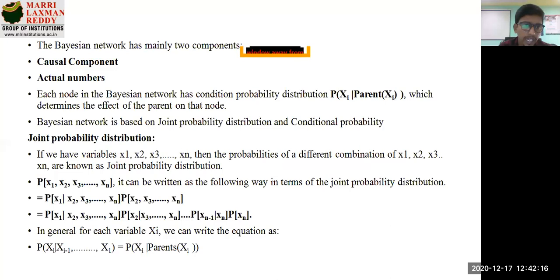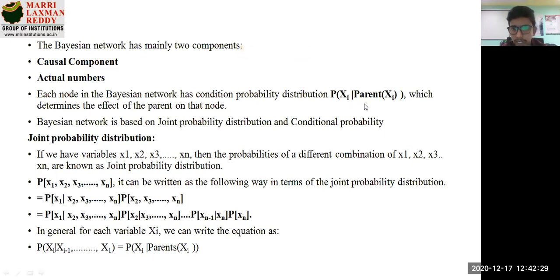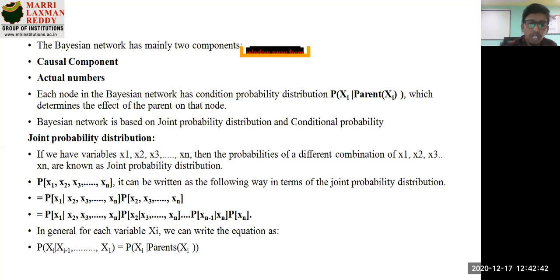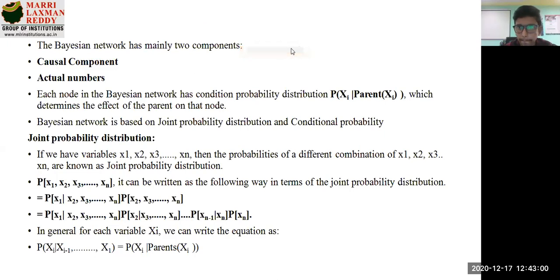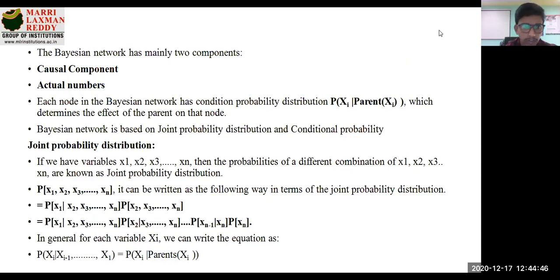A Bayesian Belief Network has two main components: a casual component and actual numbers. It has a conditional probability expressed as P(Xi | parents of Xi), which determines the effect of the parent on that node. The parent is the highest node and the next elements are children. A Bayesian network is based on joint probability distribution and conditional probability.